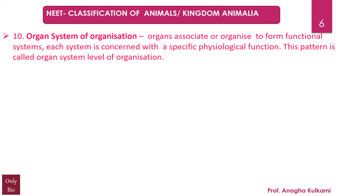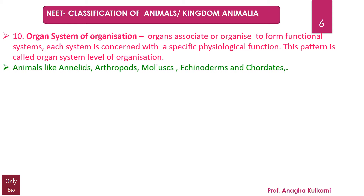Point number 10: Organ system level of organization. Organs associate or organize to form functional systems, and each system is concerned with a specific physiological function. This pattern is called organ system level of organization. Animals like annelids, arthropods, molluscs, echinoderms and chordates are examples of organ system level of organization.